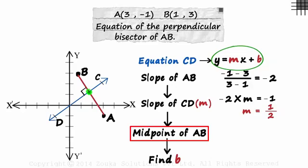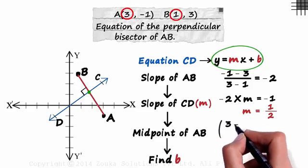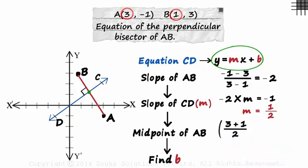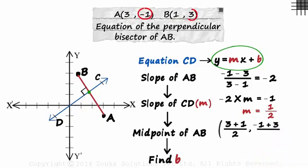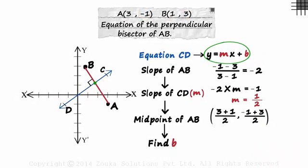Now we get to the midpoint of AB. The X coordinate of the midpoint is the average of the X coordinates of the endpoints. The X coordinate will be 3 plus 1 over 2. And the Y coordinate of the midpoint will be minus 1 plus 3 over 2. 2 comma 1 will be the midpoint of AB.